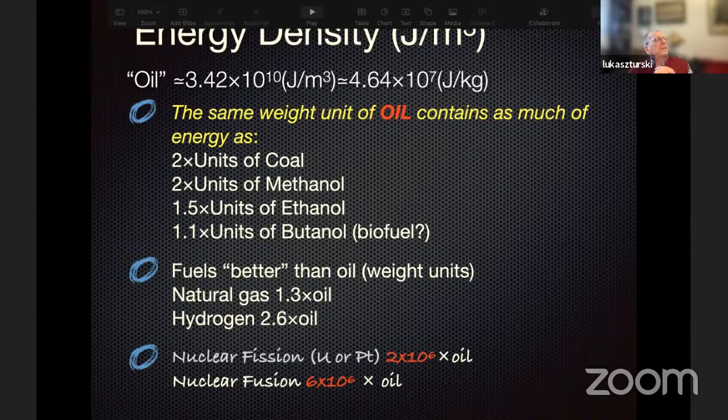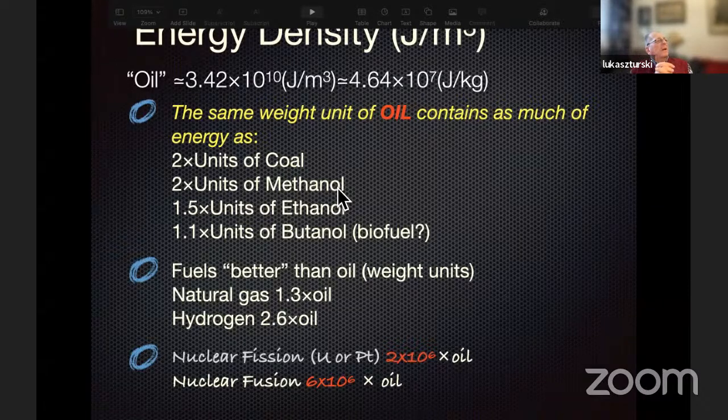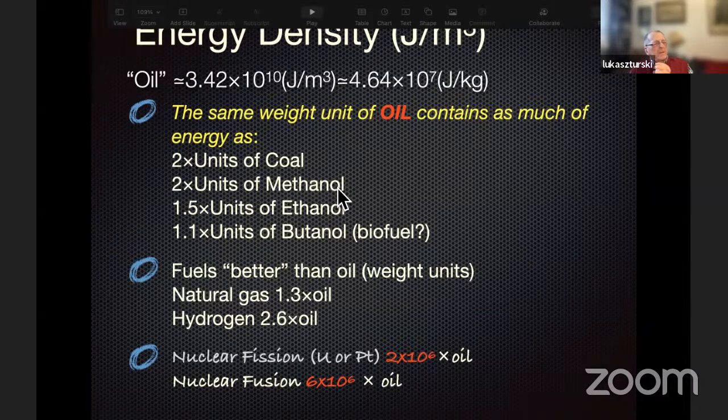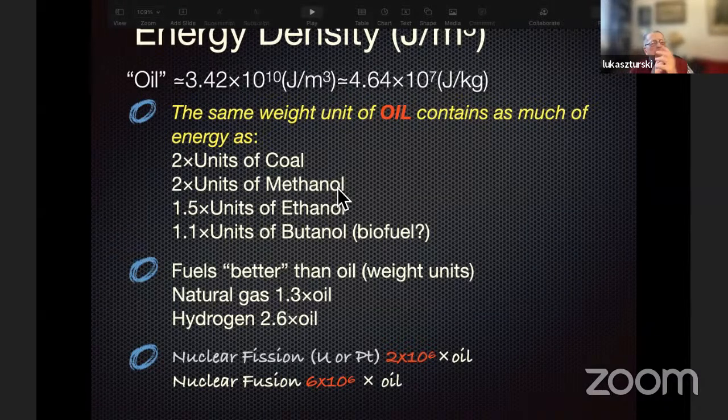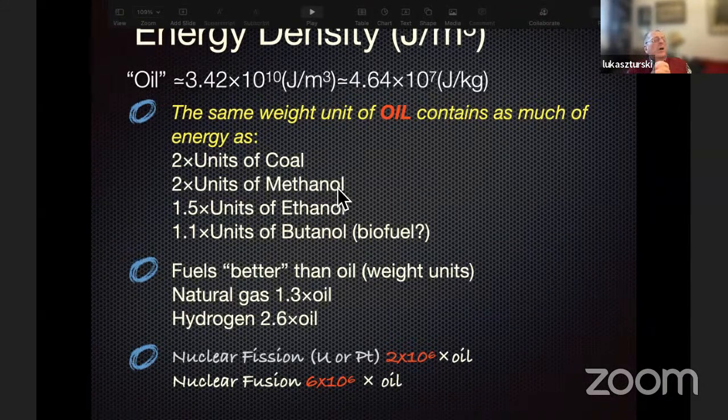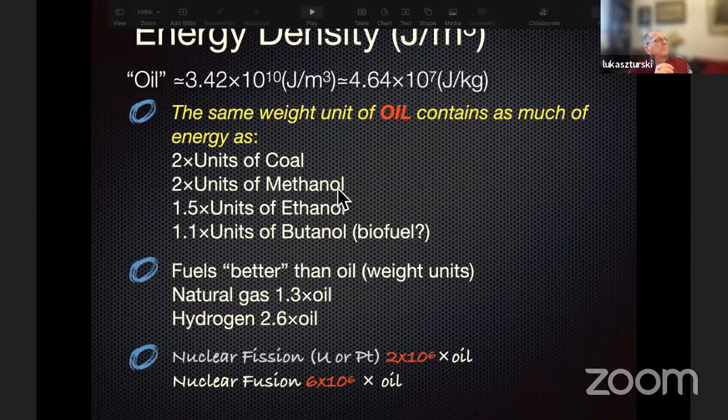Let me remind you that the energy density for crude oil is 3.42 times 10 to the 10th joules per meter cube. So it is much, much less than the energy density which we had to store inside of the Death Star in order to have the source of energy needed for our aim, destroying Alderaan. In other units that's 10 to the 7th joules per kilogram.